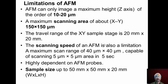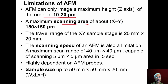In the previous lecture, we discussed the construction, working, and applications of atomic force microscopy. The major limitation of AFM is the scanning area. It can image a maximum height of the order of 10 to 20 micrometers, and the maximum scanning area in x and y axes is 150 by 150 micrometers. The travel range of the x-y sample stage is 20 mm by 20 mm, and z-axis movement is limited to about 20 mm.